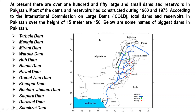At present there are over 150 large and small dams and reservoirs in Pakistan. Most of the dams and reservoirs were constructed during 1960 to 1975 — a very important 15-year period during which most of Pakistan's major dams were built.